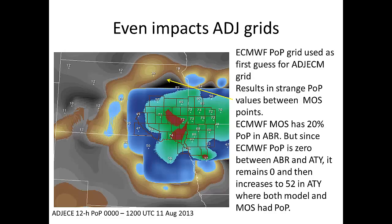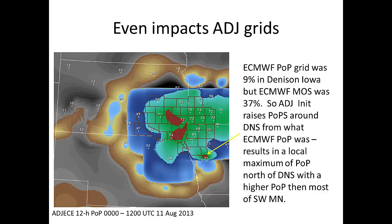Another thing that can happen is that if it locally raises a POP on the edge of the area, you end up with these bullseyes, which may be unrealistic. For example, ECMWF had a POP of 9% in Denison, Iowa — where the arrow is pointing — for the 12-hour period, but the MOS had 37%. So then it locally raised the POP across that whole neighborhood. As a result, you get this local bullseye of categorical POPs just north of Denison, Iowa — actually a higher POP than what ended up being across all of southwest Minnesota. So you end up with these weird numerical anomalies, not just with the deterministic model but with the ADJs as well.